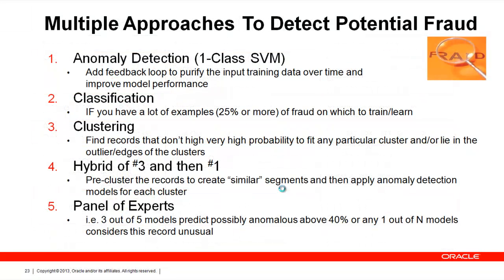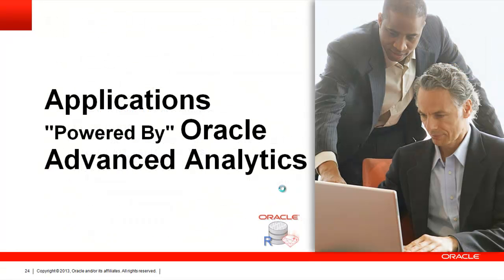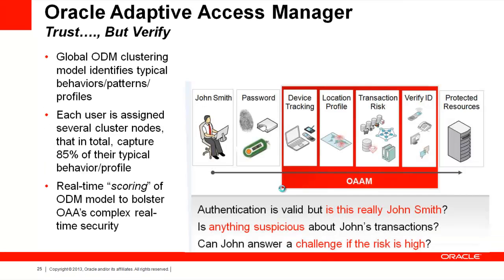There are several approaches: just use anomaly detection as a single model; use classification or clustering techniques; do a hybrid of clustering followed by anomaly detection; or build a panel of experts by launching five, ten, or twenty different models. Because it's fairly easy to do these things inside the database, it's pretty easy to build applications. That's a little bit of what we've been doing at Oracle — turning the database into a full analytical platform.